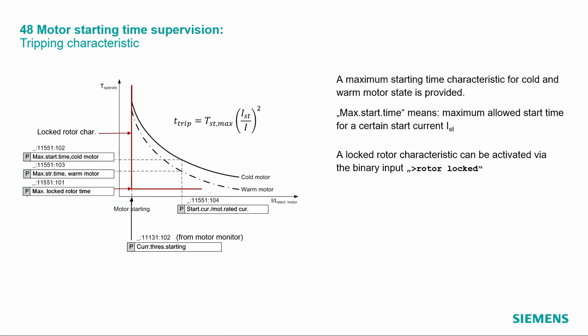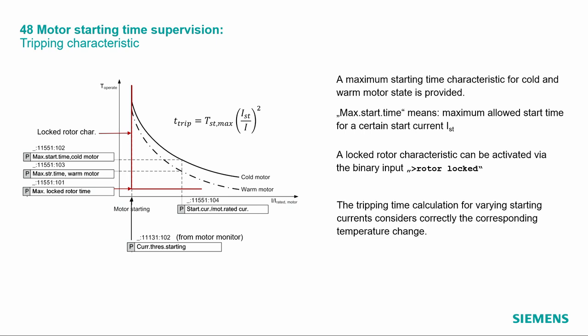The maximum starting time here means the maximum allowed start time — the thermal limit for the motor. This is often equivalent to the locked rotor time. The locked rotor characteristic is triggered by a binary input when a tachometer confirms the rotor is locked. The maximum locked rotor time here is not the limit from the motor manufacturer, but the time I want to allow for my application — normally a faster, more conservative time.